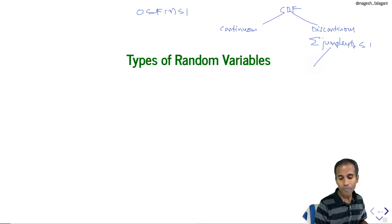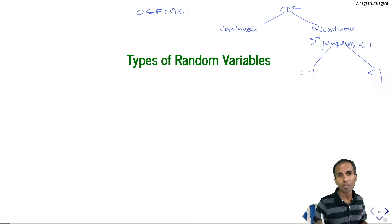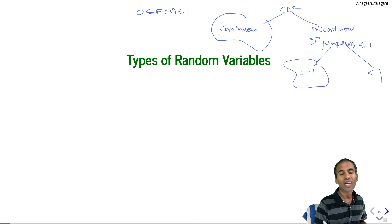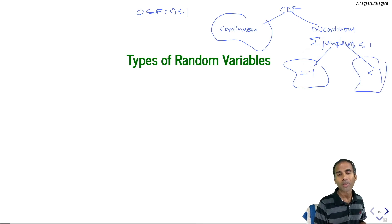There are two cases: the sum of the jump lengths may be exactly equal to 1 or strictly less than 1. We use these properties to classify the random variable into 3 types. If the CDF is continuous everywhere, it is a continuous type random variable. If the CDF is discontinuous with sum of jump lengths exactly equal to 1, it is discrete type. Otherwise, it is called a mixture type random variable.